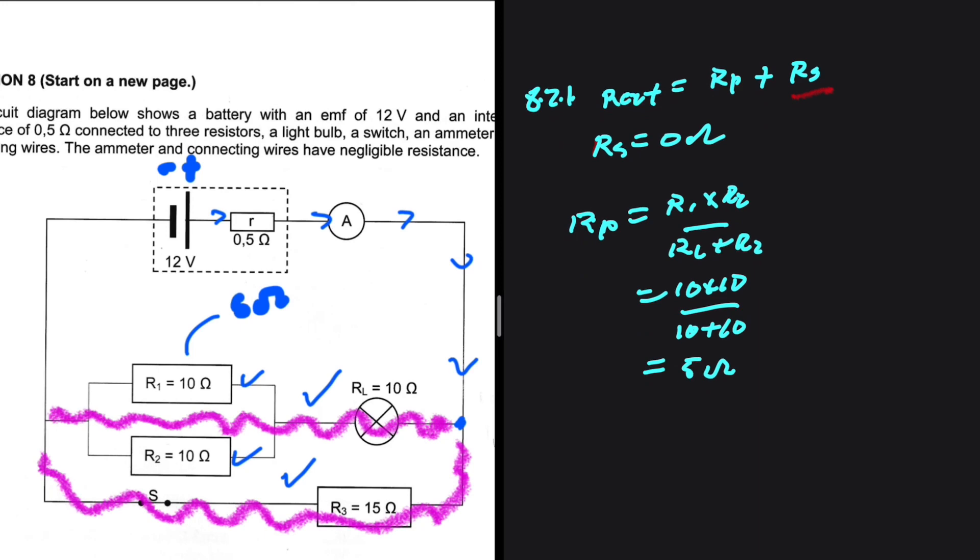That tells us that the total resistance on the upper path is 5 ohms plus 10 ohms, which is 15 ohms. So if we want to calculate R_P for this path and this path together, we're going to have R_P for the entire circuit equal to R1 multiplied by R2. R1 is the total resistance on the upper path, which is 5 plus 10, multiplied by the total resistance on the lower path, which is 15 ohms.